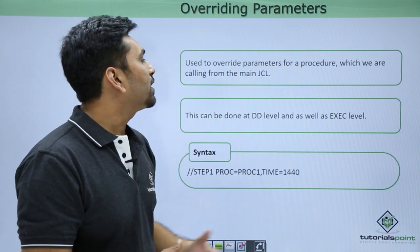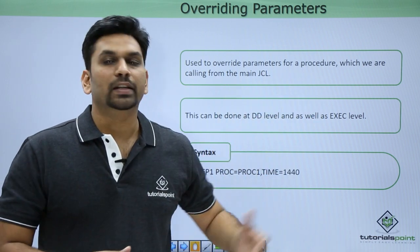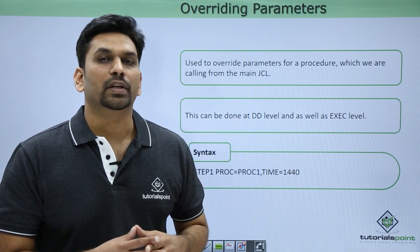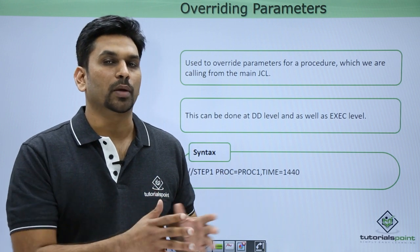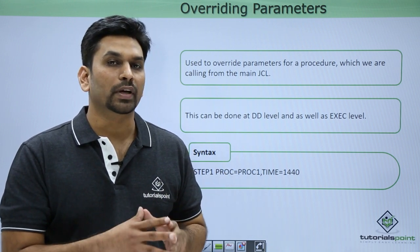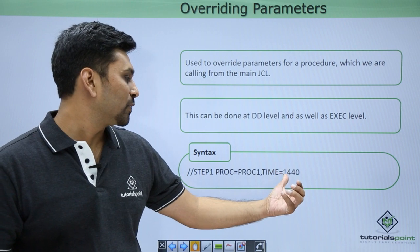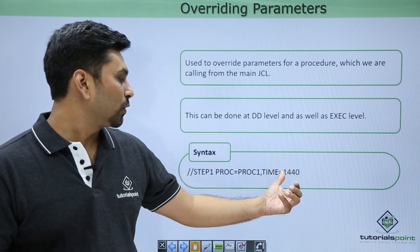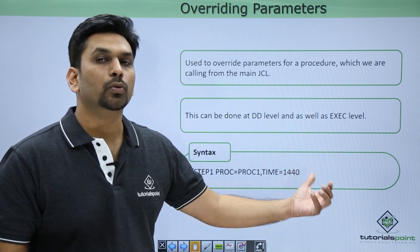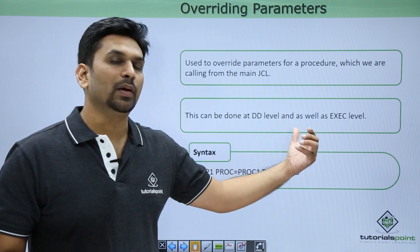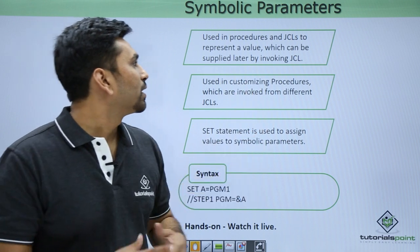Overriding parameters are used to override parameters for a procedure which you are calling from the ambient JCL. Suppose you are calling a procedure and inside that procedure you have coded a time parameter. If you want to override that, you can mention it when calling the procedure. For example, calling procedure one with time equal to 1440 will go into the procedure and change the time parameter. This can be done at the DD level as well as the EXEC level.